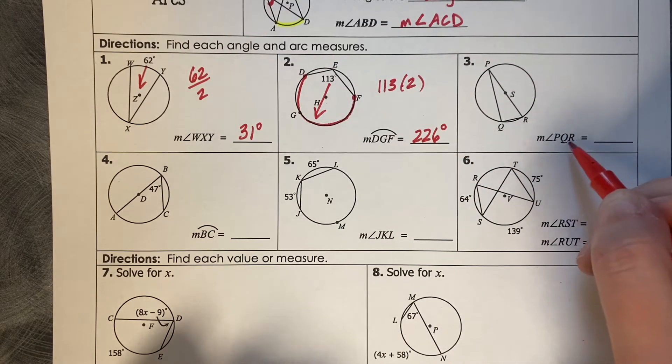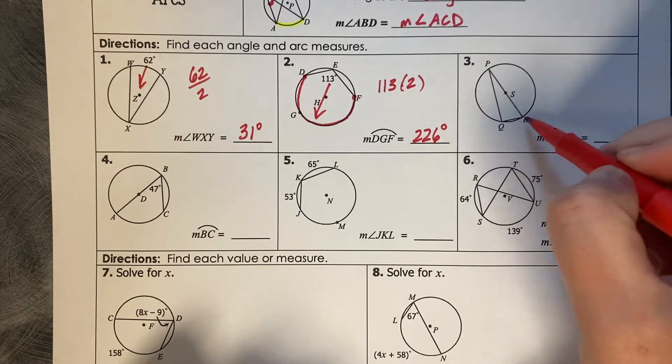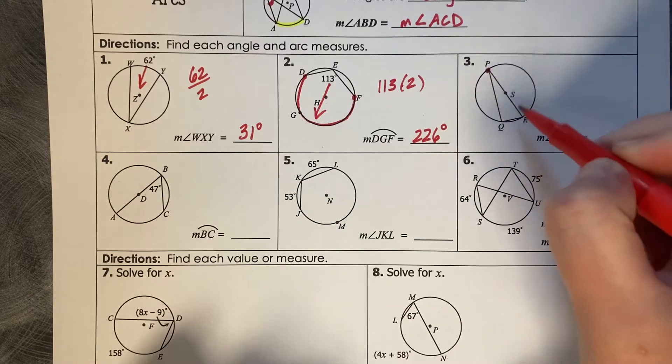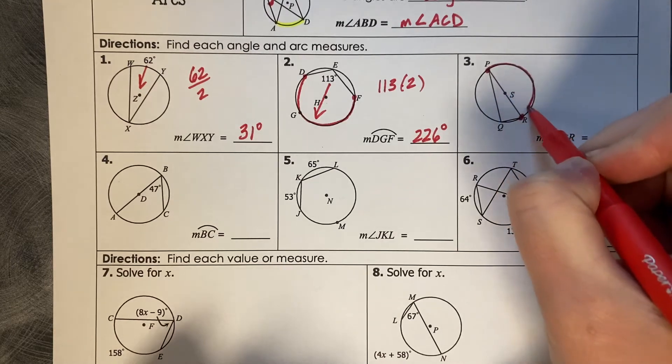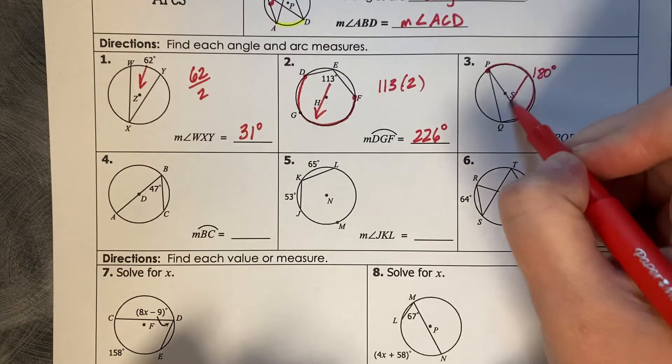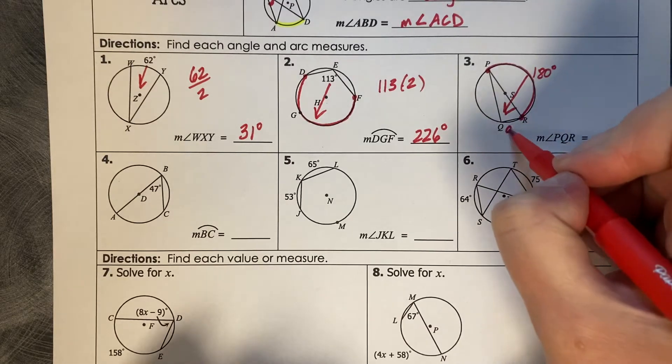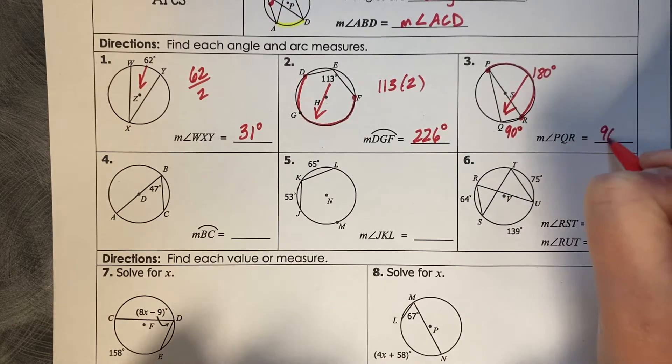All right, we'd like to know angle PQR, which its endpoints are on a diameter. So this measure is 180 degrees. Going back to its inscribed angle is going to be 90 degrees.